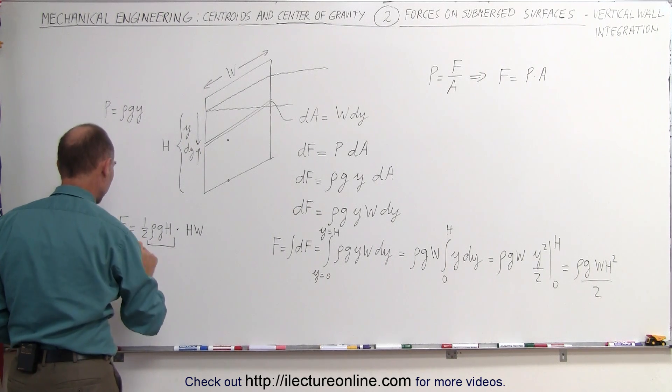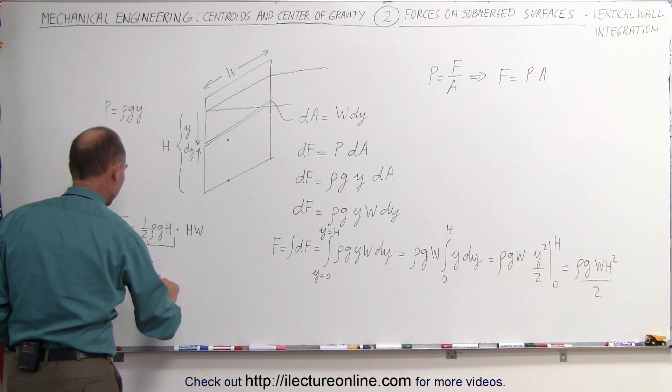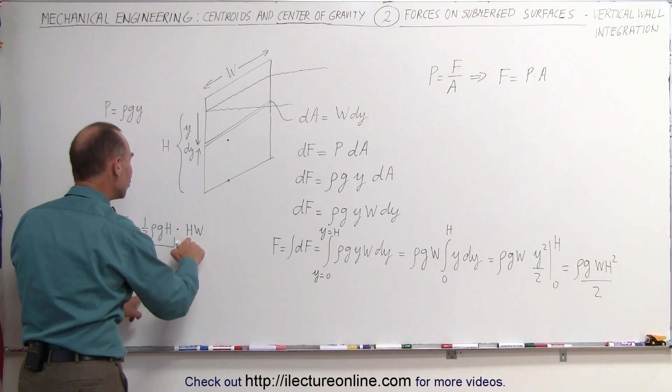So the force on a vertical wall can be calculated by taking the average pressure, the pressure at the halfway point, times h times w.